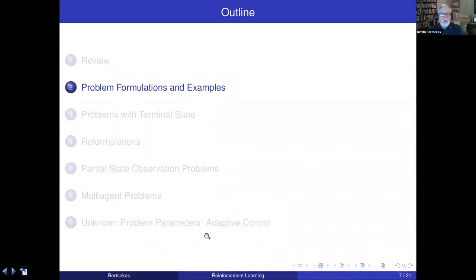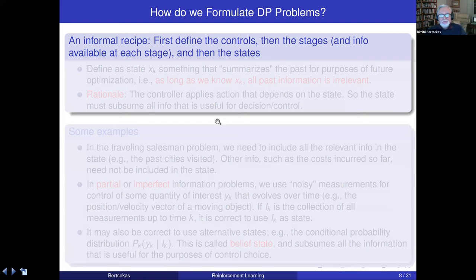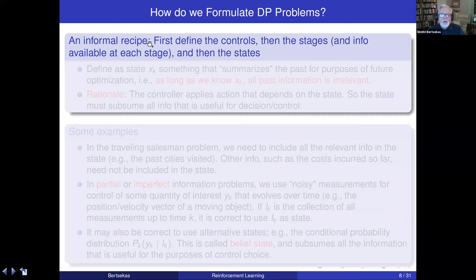Let's start with problem formulations. Given a problem that looks like a dynamic programming problem, how do you formulate it? It doesn't come neatly packaged. You have to define controls, stages, states, system equations, and so on. Here is an informal recipe. The first thing to define is the easiest one—the controls—basically the decision variables of the problem. Then you break down the controls into stages, which is defined by when information becomes available. If information comes in stages, those are usually the stages of your dynamic programming problem.